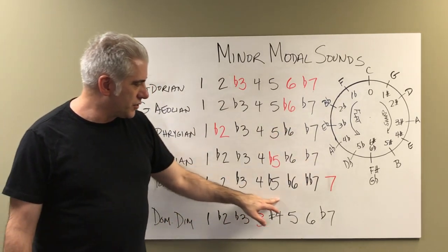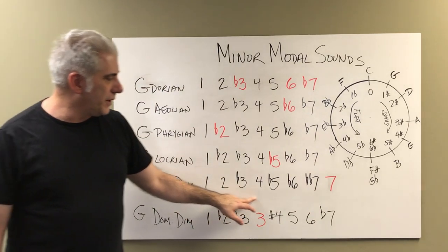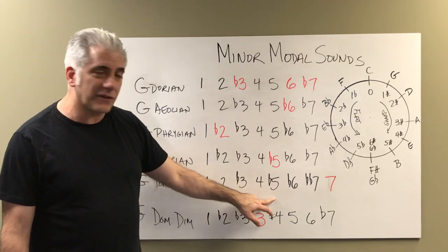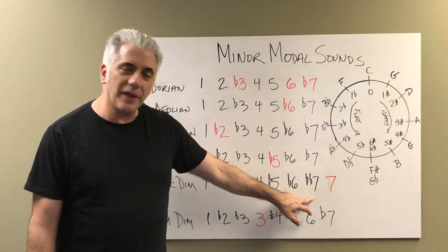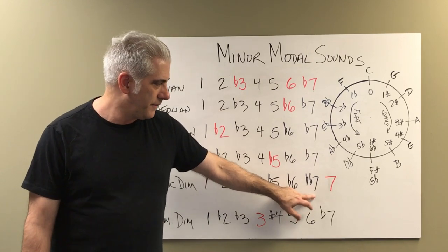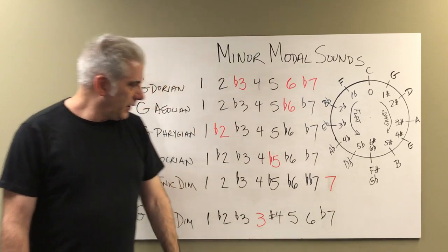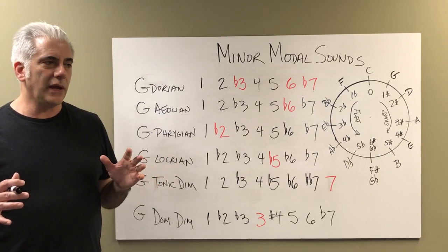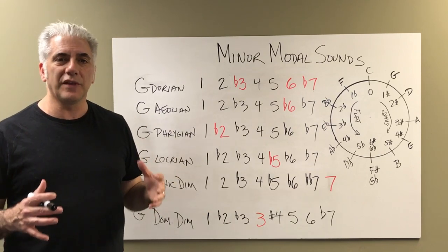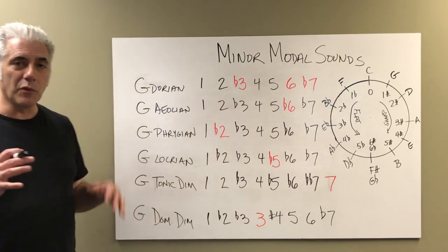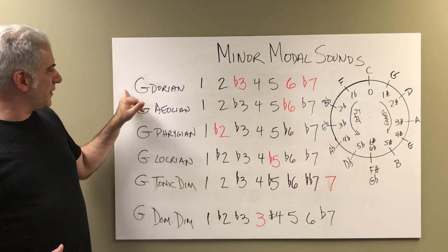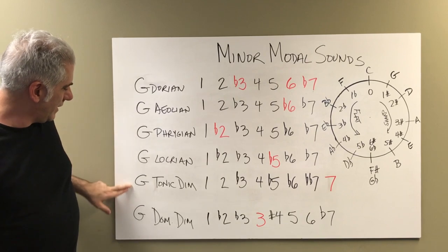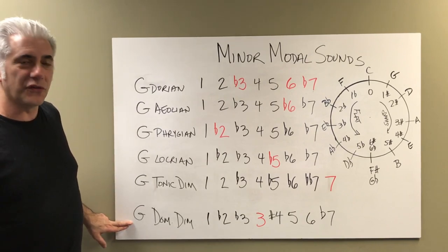Then we go to tonic diminished. It has a lot of similar notes — it's got a natural two, a flat three, four, flat five — so that's kind of different. It's got a flat six, a double flat seven which is really the sixth or the thirteenth, and then it has a major seventh. It's a sound I'm using as a logical extension because it really is a continuation of tension building towards the tonic. We're heading towards C major as if this is a two chord in F major, but I'm really thinking a progression around the circle of fifths where I'm going to resolve to C major.